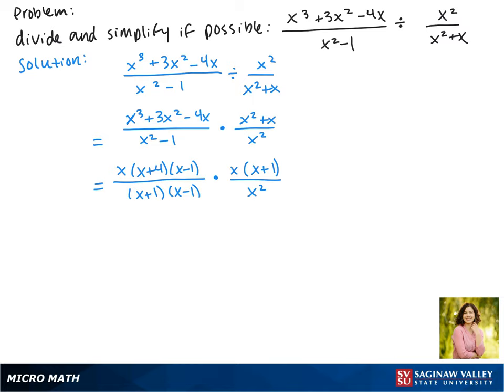Now that everything is factored we can look at factors that will cancel. So in the numerator and the denominator we have an x minus 1. We also have an x plus 1.